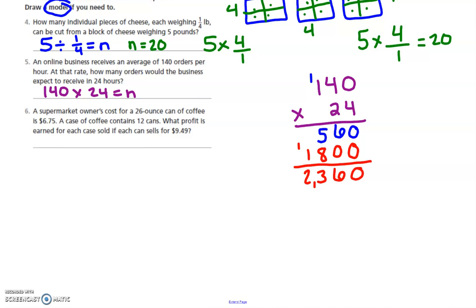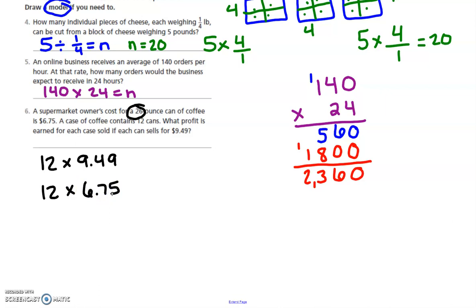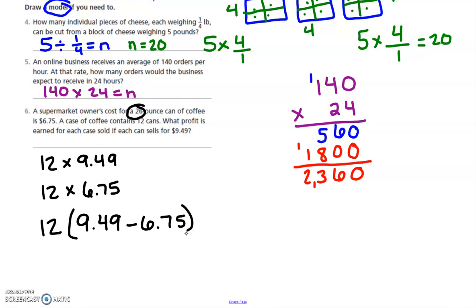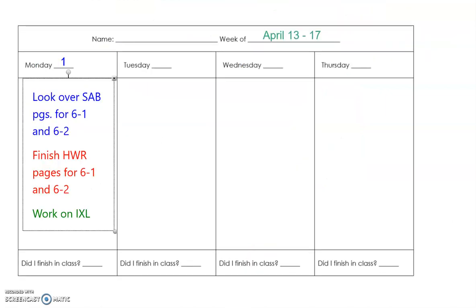Number six says a supermarket owner's cost for a 26-ounce can of coffee is $6.75. A case contains 12 cans. The selling price is $9.49 per can. They want to know the profit — how much they earn after buying all this coffee. It's easier to find the difference between $9.49 and $6.75 per can first, before multiplying by 12. I'm running out of time on my video, so I'll just give you the answer: the profit was $32.88.